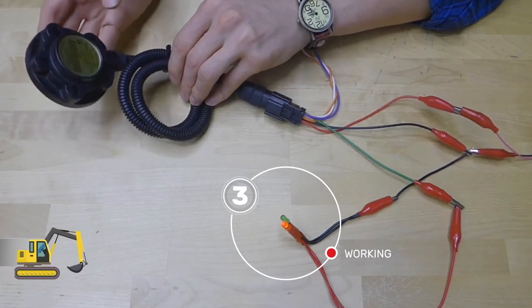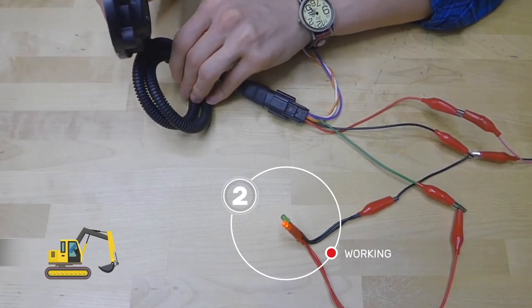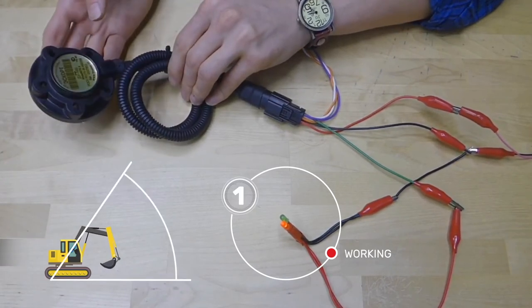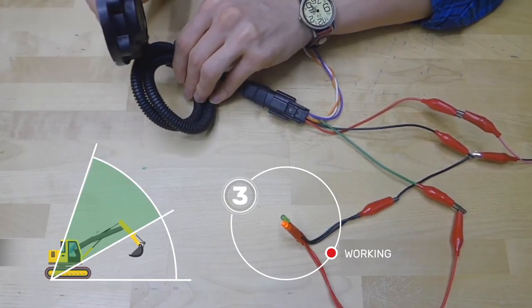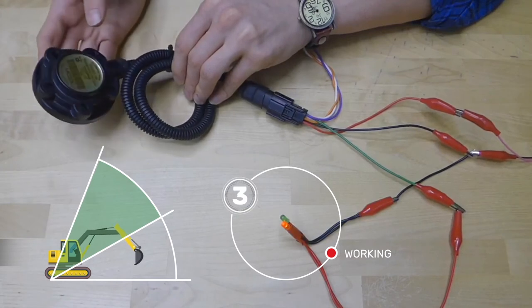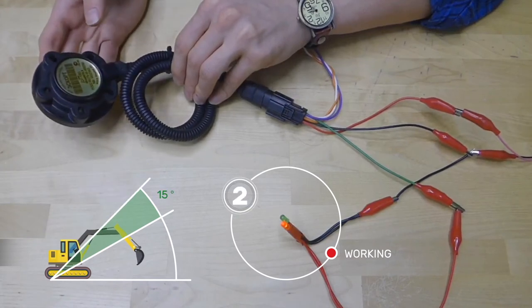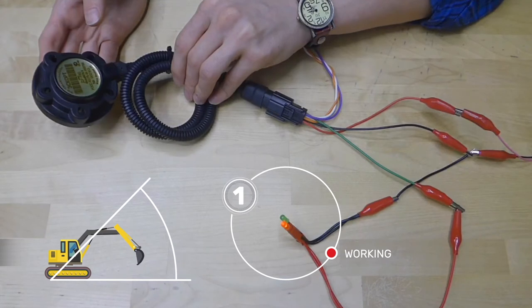If in the period set, the sensor tilting has changed more than the minimal angle change set, the output opens and we believe the machinery is working.